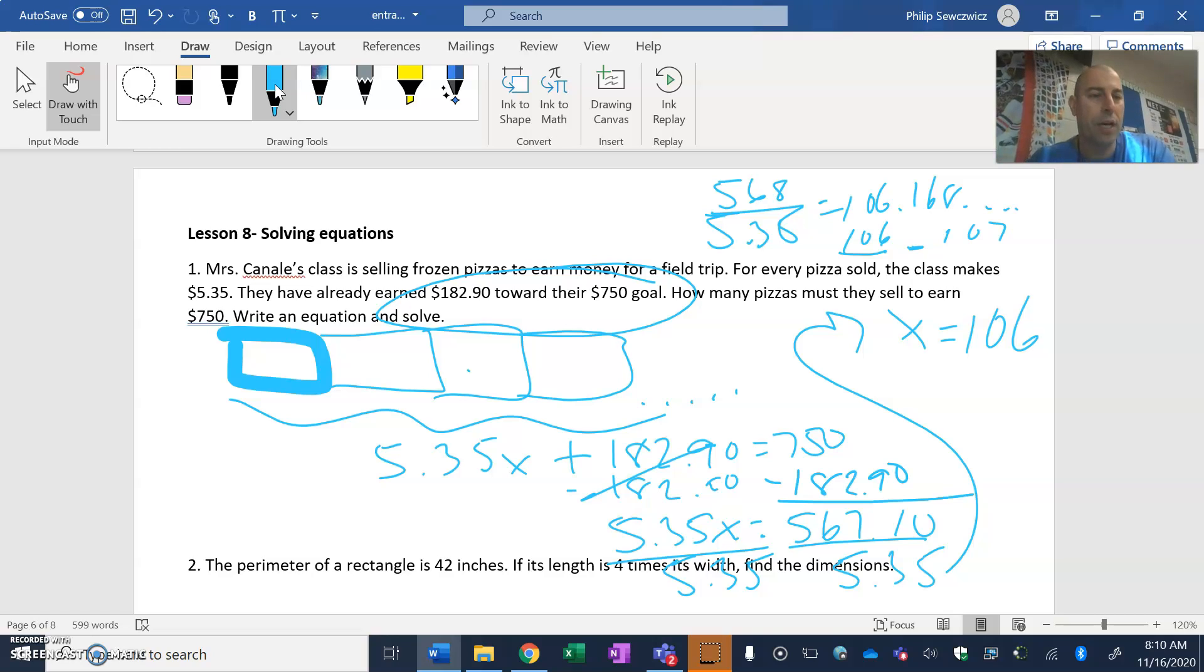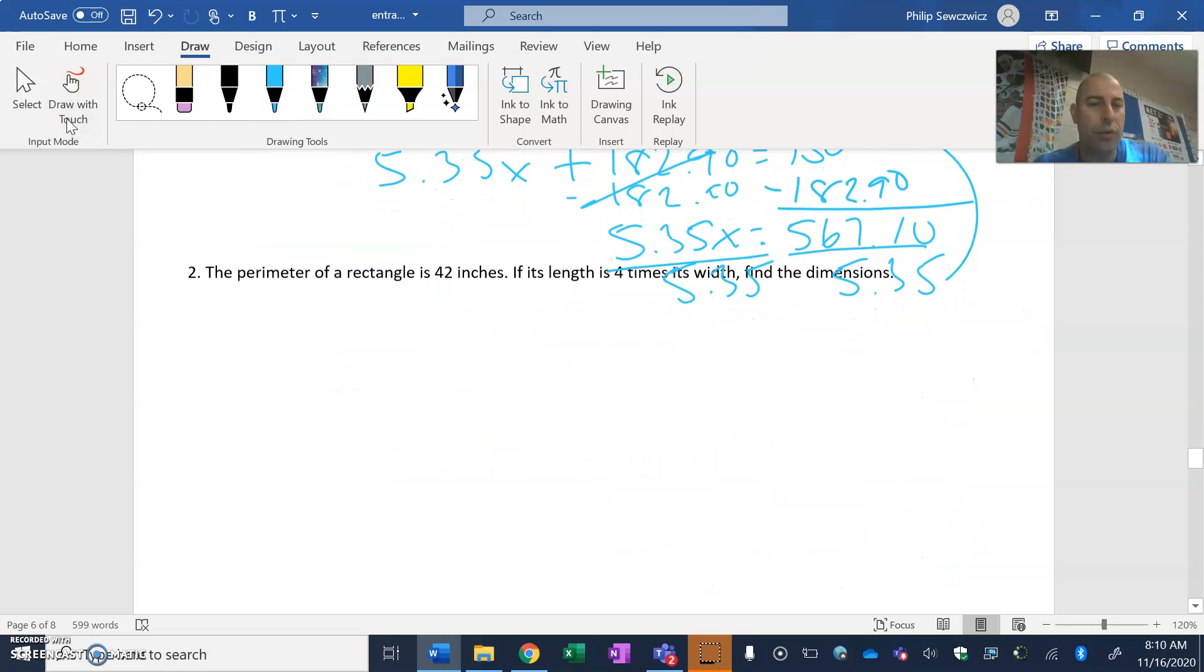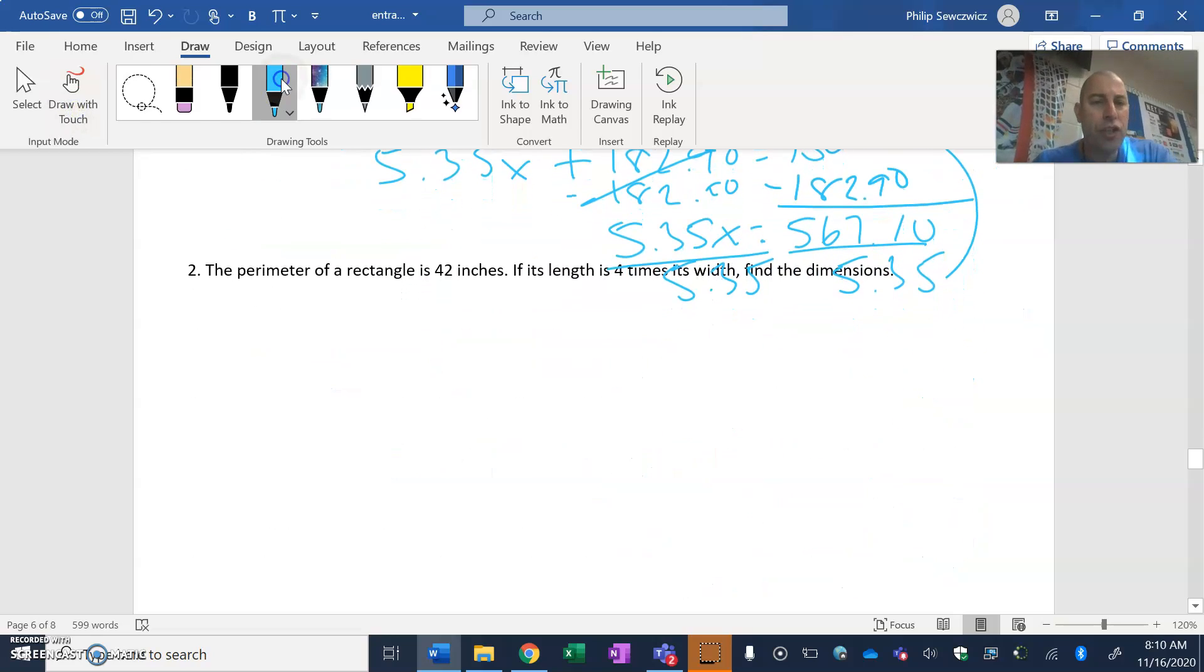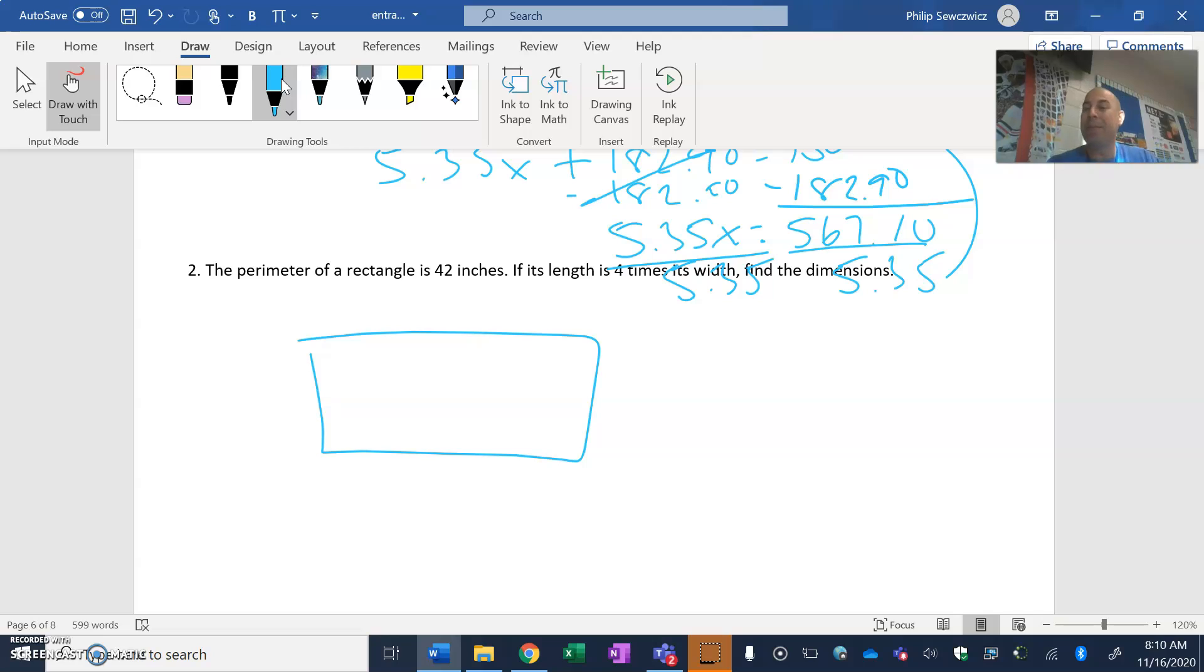All right, there we go. Let's go and see what question number two here is. Visual perimeter of a rectangle. Remember what a rectangle looks like. There we go. Perimeter means we add up all the sides. It's the total distance of the shape there, around the shape. So perimeter of a rectangle is 42 inches. If the length is four times its width.